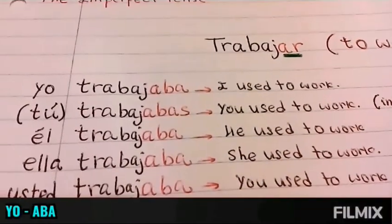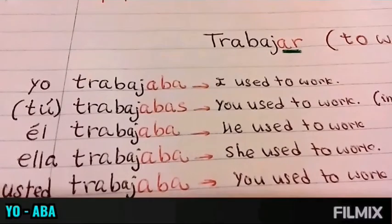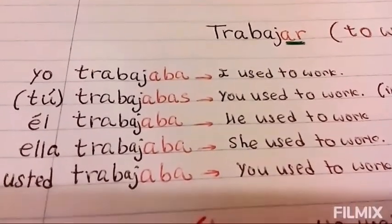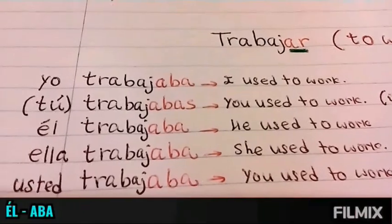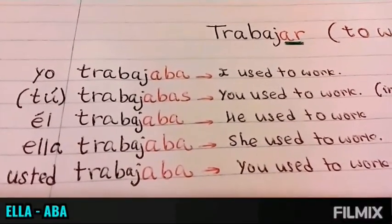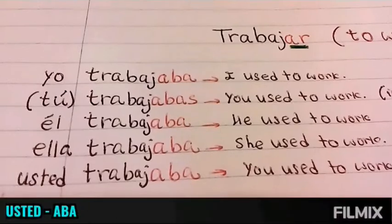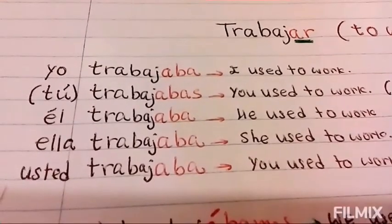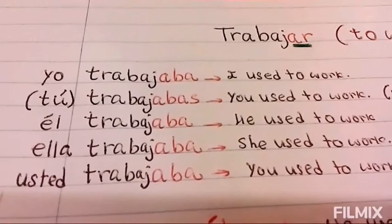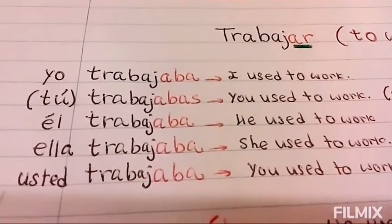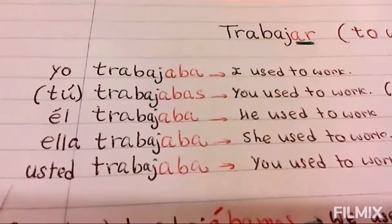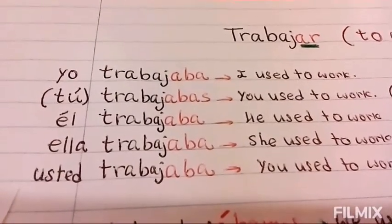For yo, the ending is -aba. For tú, -abas. For él, -aba. For ella, -aba. For usted, -aba. Notice that yo, él, ella, and usted have the same ending, which is unusual.